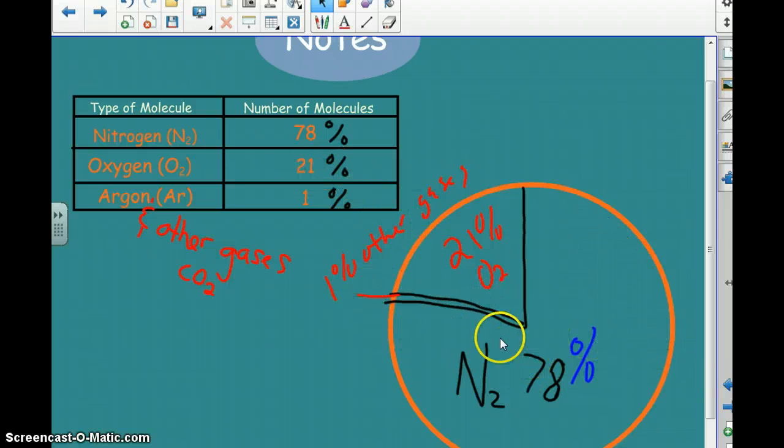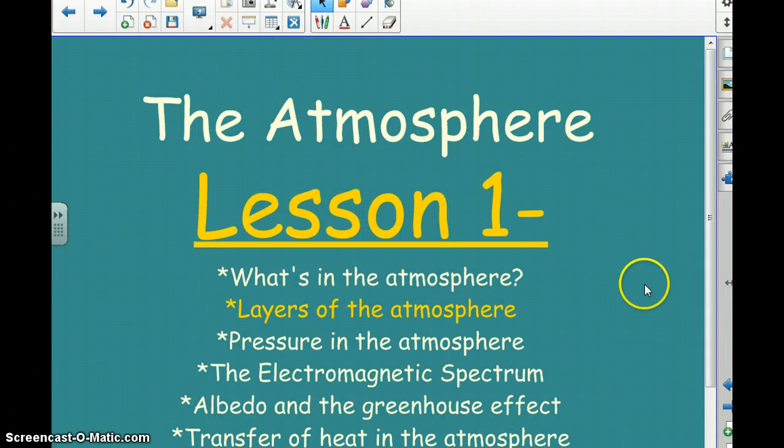You can see the majority of the air that we breathe is nitrogen. So keep that in mind, what is the atmosphere? The atmosphere are just layers of atmosphere together and made up of mostly nitrogen, 78%, and 21% oxygen, and only 1% argon and other gases. So that's it. Next one we get into will be the layers of the atmosphere.